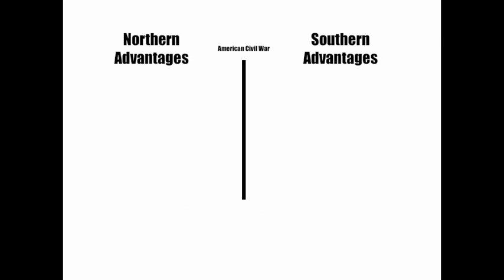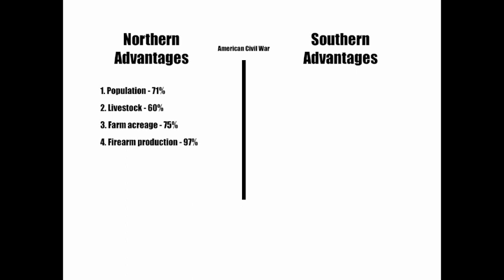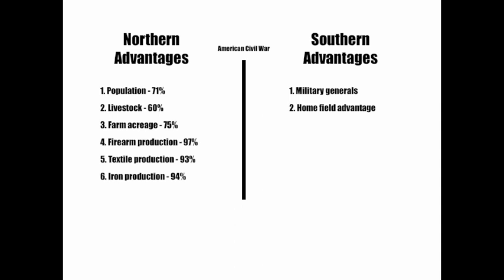There were certain advantages held by both sides. The North held a 71% advantage in population, 60% of all livestock, 75% of farm acreage, 97% of firearm production, 93% of textile production, and 94% of iron production. The South, on the other hand, had the greatest military generals, home field advantage knowing the battlefields, and a defensive strategy. The North was obligated to defeat the South — the South merely had to hang on.